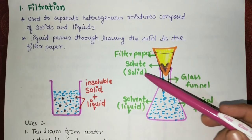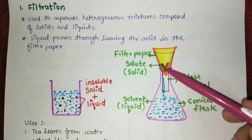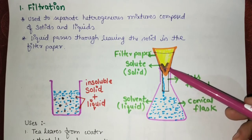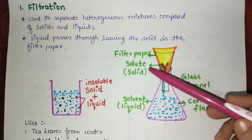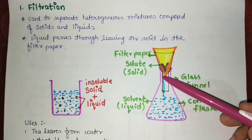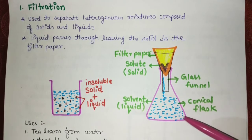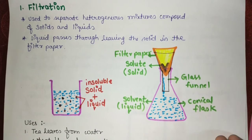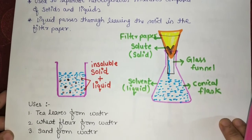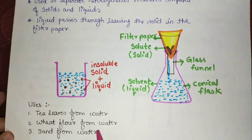Why? Because the solid particle size is large enough that it cannot pass through the pores of the filter paper. So the solid remains on the filter paper, and the liquid, because of its small particle size, passes out and is collected at the bottom of the conical flask. You can use filtration to separate tea leaves from water, wheat flour from water, or sand dissolved in water.